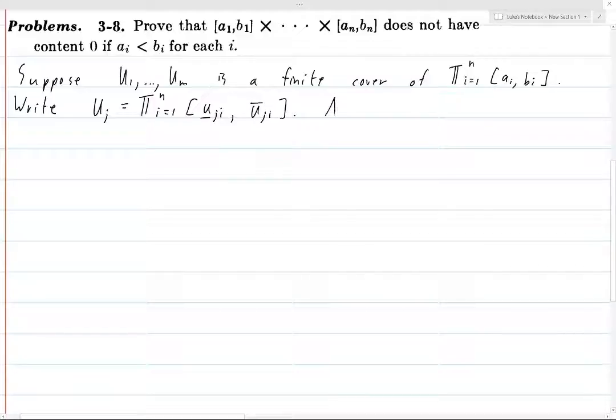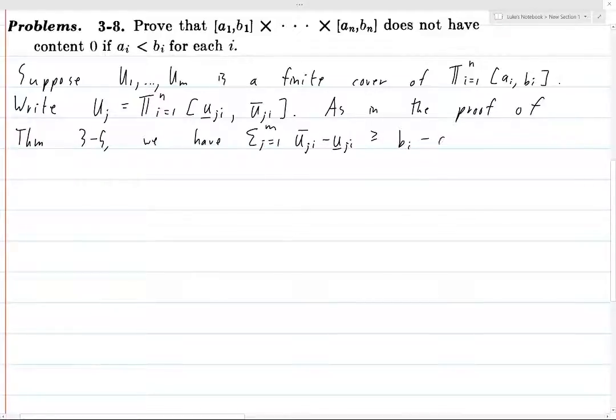Okay, so now, as in the proof of theorem 3-5, we have that the sum from j equals 1 to m of the distance between uji upper and uji lower, I'll just call it that instead of overline and underline, must be greater than or equal to bi minus ai, and this must hold for all i. And there's sort of a verbal argument given in the text, but I think that this is easier to see as a visual argument. And again, this is in the proof in the textbook, so you don't need to go through what I'm doing right now.